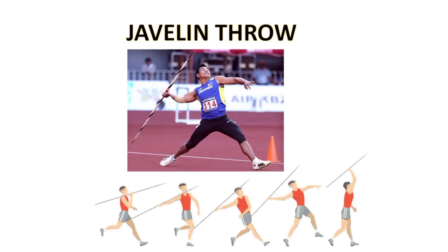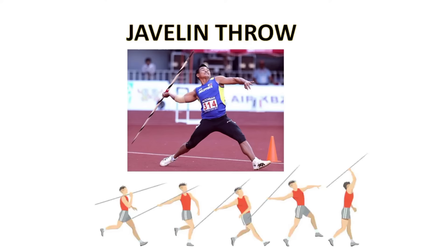The javelin throw is a throwing event where the object to be thrown is a spear-like implement made of metal, fiberglass, or in some cases carbon fiber. The facility includes a runway, a throwing arc, and a landing sector. The minimum length of the runway is 30 meters and the maximum is 36.5 meters, marked by two parallel white lines 5 cm wide and 4 meters apart.